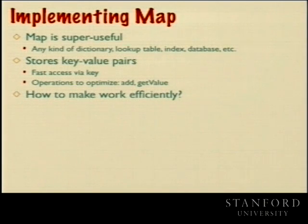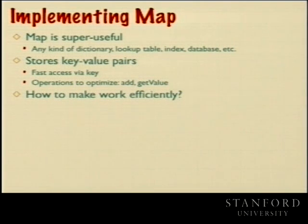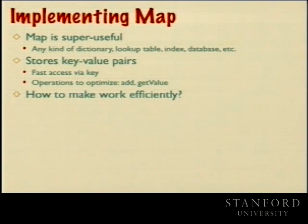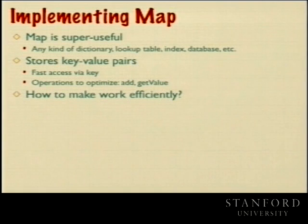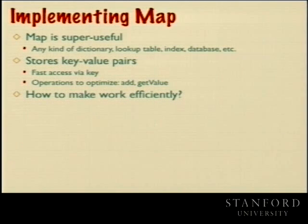Map is probably the most useful thing in the class library after vector. Many things do lookup-based activities: looking up students by ID, phone numbers by name — any situation needing a key and associated satellite information with fast retrieval and update. Map uses key-value pairs. The goal is to make both update operations (add/remove) and the lookup operation run in O(log n) time or better.